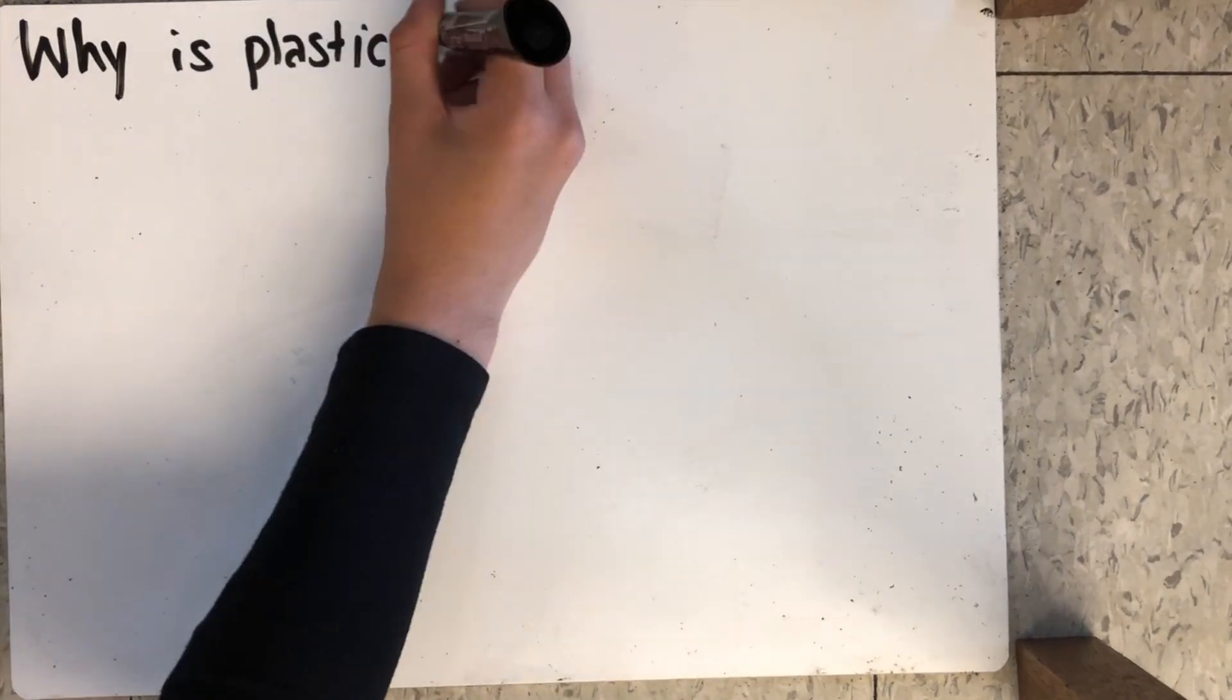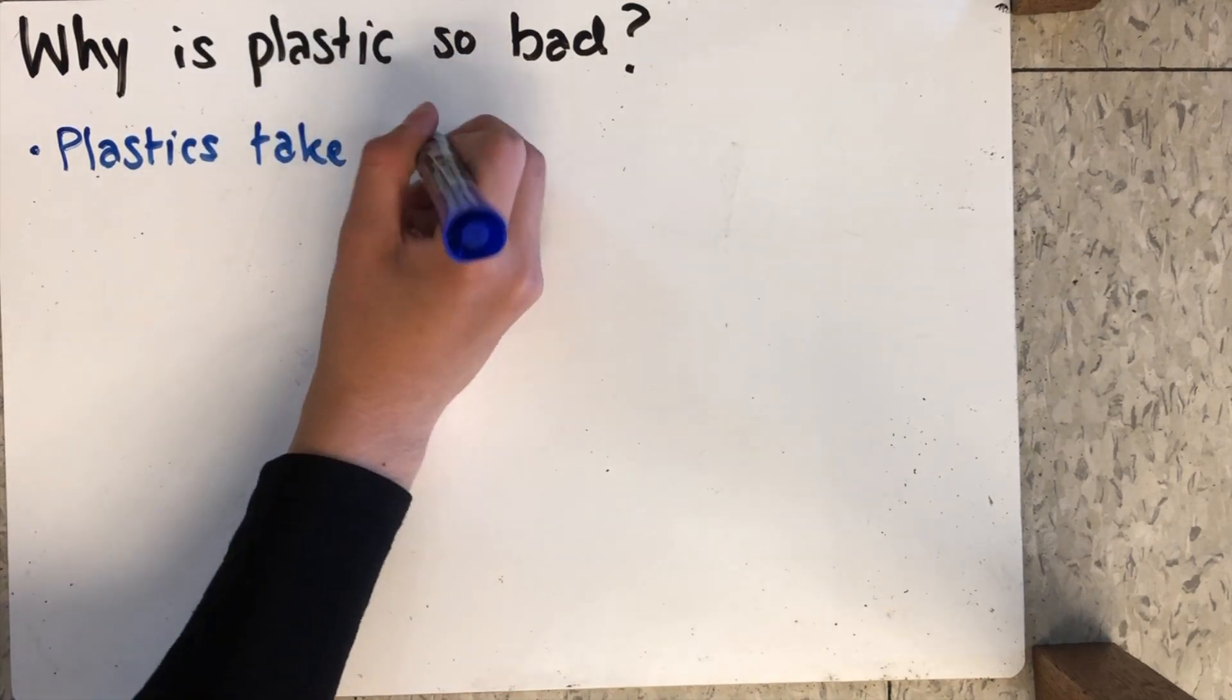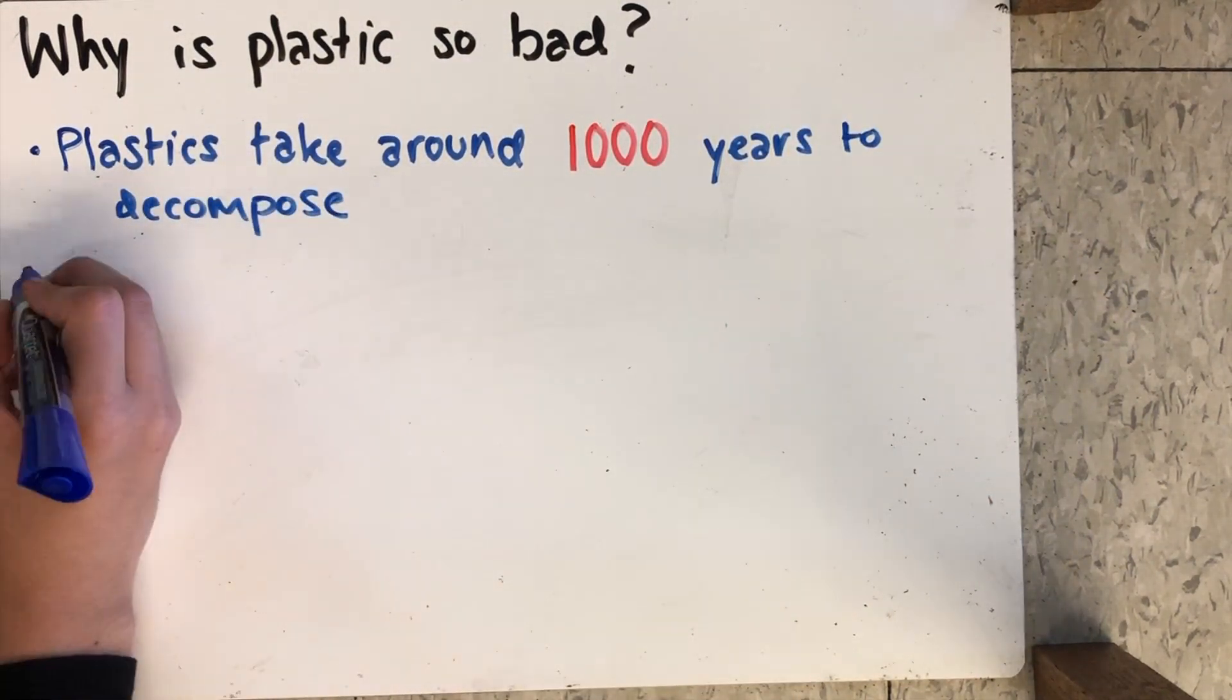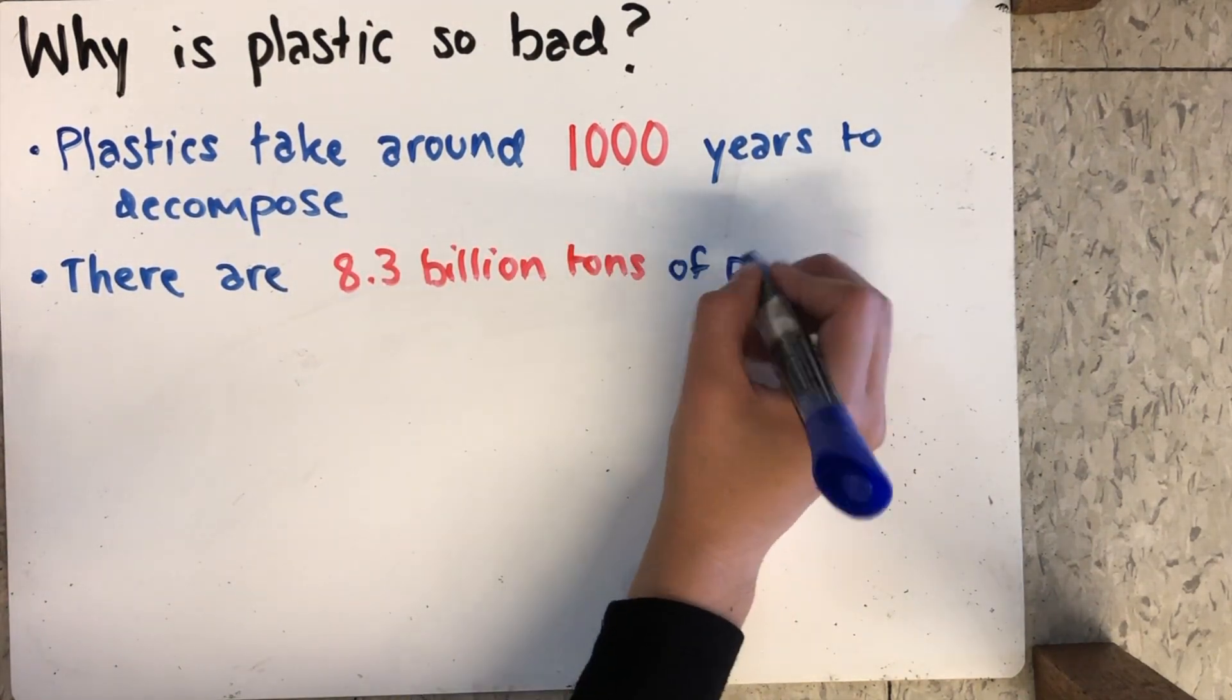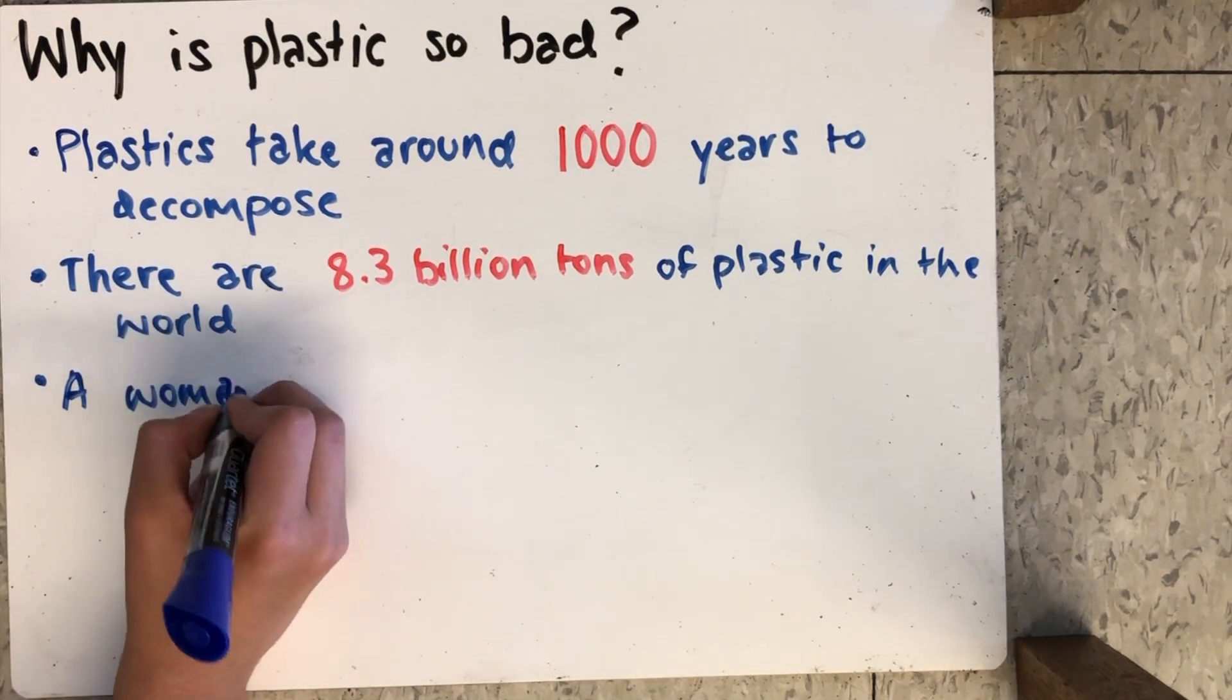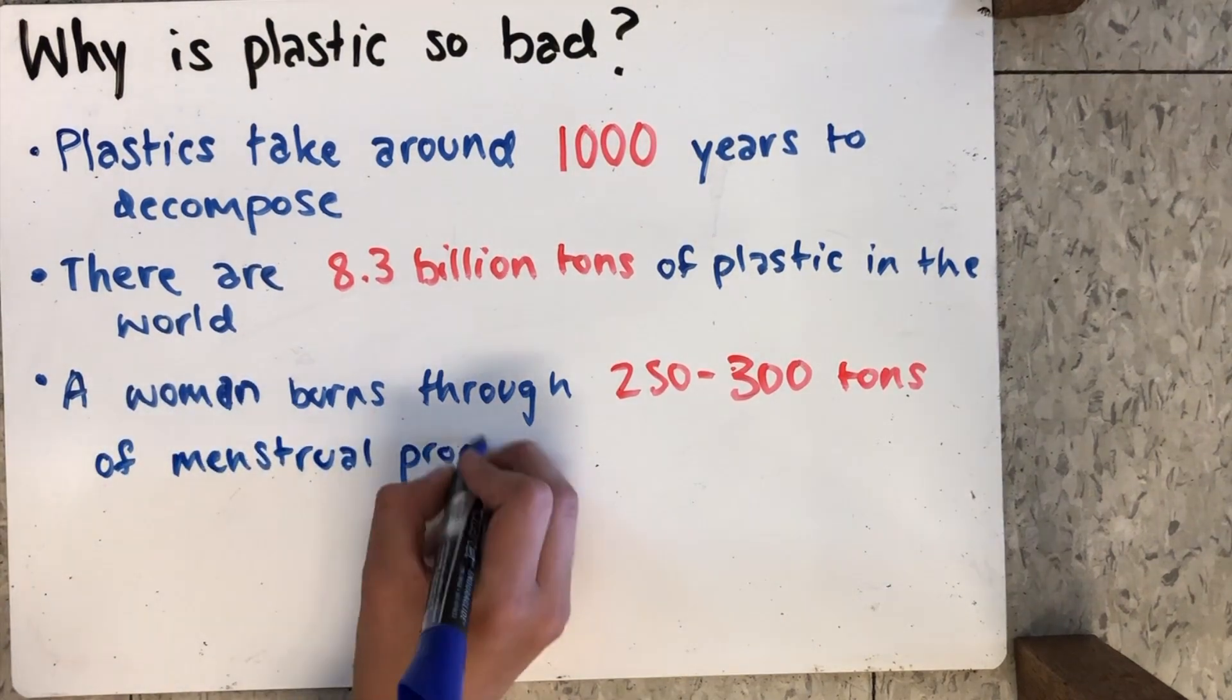It's not only plastic applicators that are bad, plastic in general is horrible for the environment. Plastics take around 1,000 years to decompose. Additionally, there are 8.3 billion tons of plastic in the world, all of which has never decomposed. Finally, a woman burns through 250 to 300 tons of menstrual product in her lifetime. That's a lot of plastic applicators.